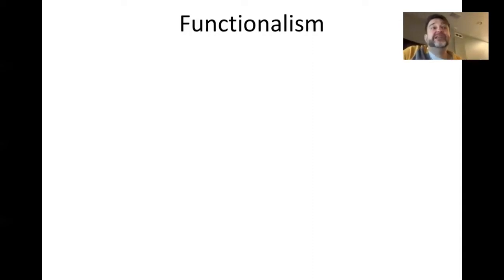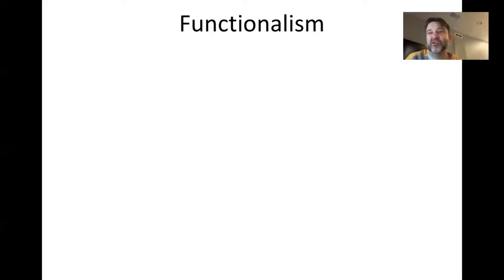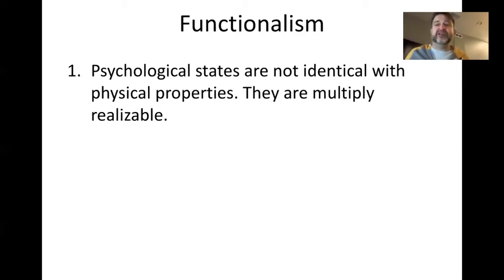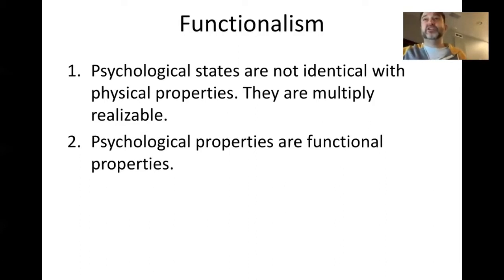The last view we're going to talk about is functionalism. Functionalism is in some ways similar to behaviorism because it's going to say that mental states are relationships — a kind of relation — but what it actually says is that a mental state is a function. We've talked about functions a little bit with modules. Functionalism says that psychological states are not identical with physical properties. You don't have to have a particular kind of neural setup or any particular kind of physical setup to have a psychological state. Instead, psychological states are multiply realizable — you don't have to have a central nervous system to have them.